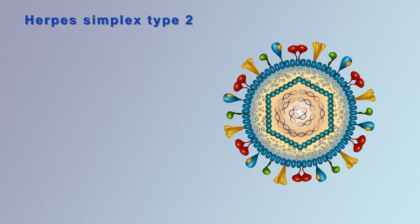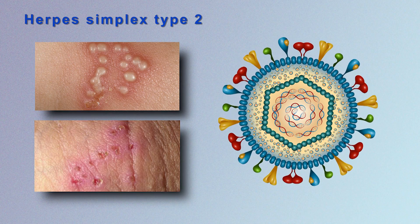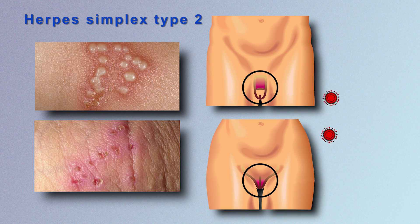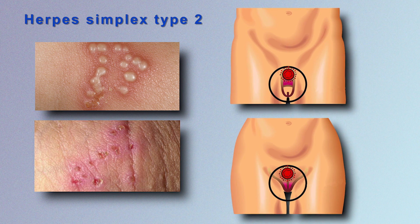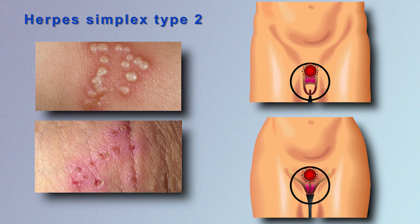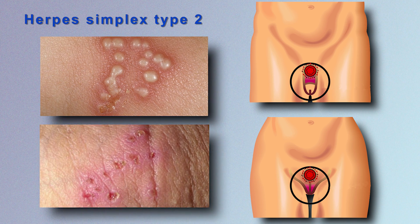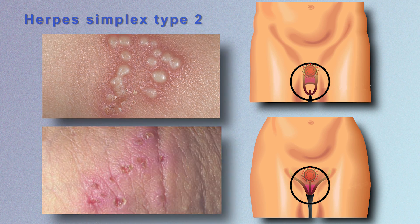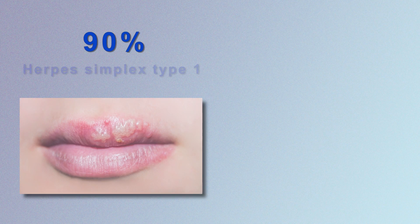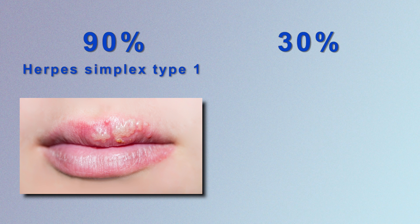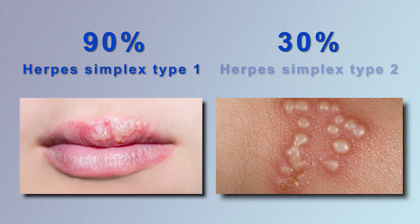In herpes simplex type 2, which causes sexual infection, the virus infects the genitals. Again, in some people it can cause recurrent infection and sores in the genitals, while in others it infects once and never comes back. About 90% of the population are infected with herpes simplex type 1, and about 30% with herpes simplex type 2.